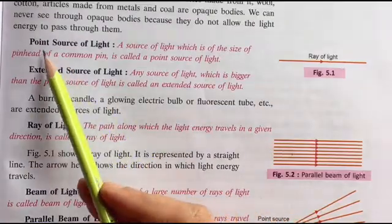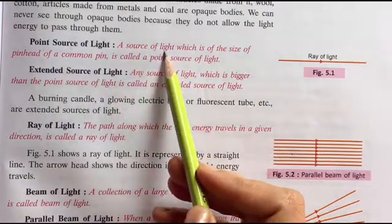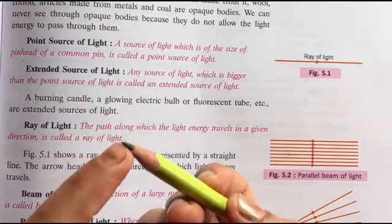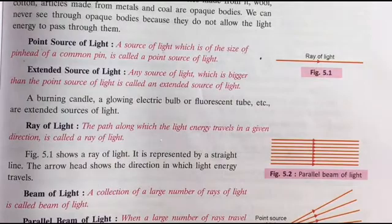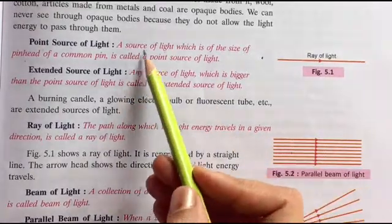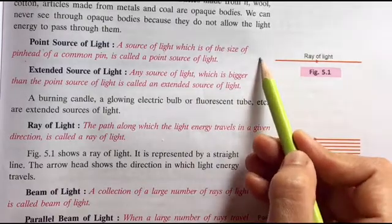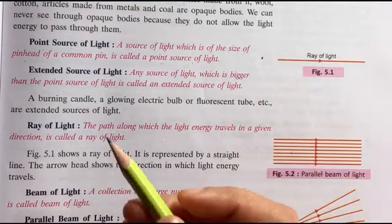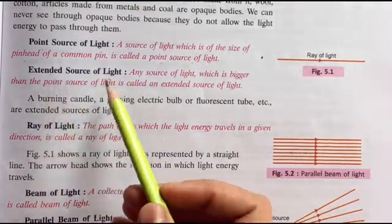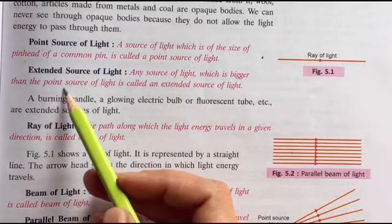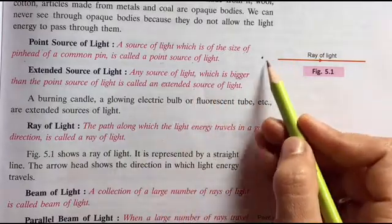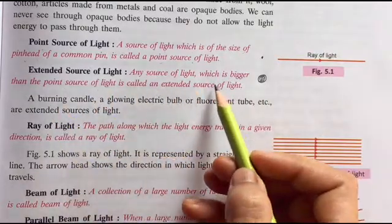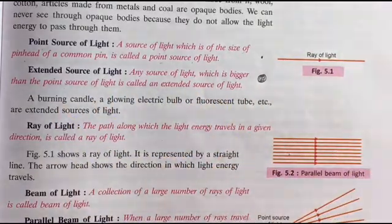Now next comes point source of light. A source of light which is of the size of pin head - the tip of a pin, which is just a dot we can say. So any source of light which is of the size of the tip of the pin, that is your point source. Extended source - any source of light which is bigger than the point source is called extended. So if this source is a dot, the bigger one will be the extended source. What is bigger than the pin source is the extended source of light.